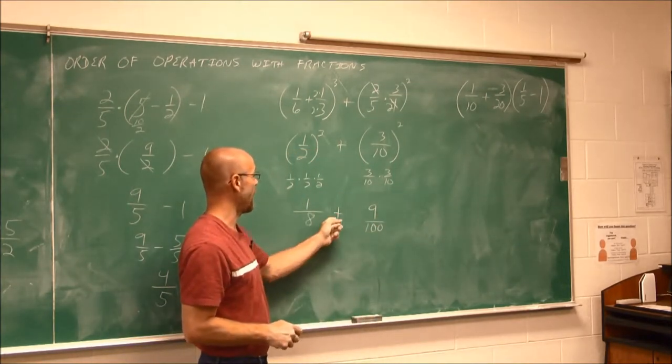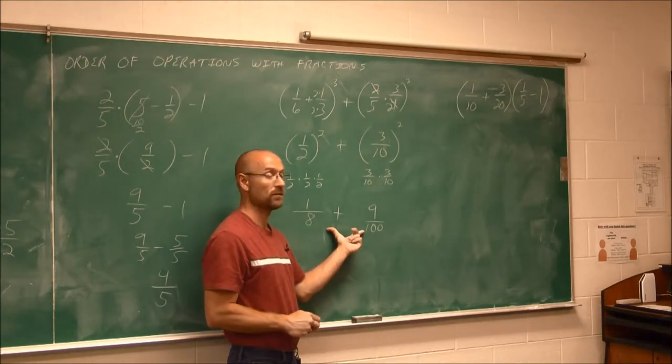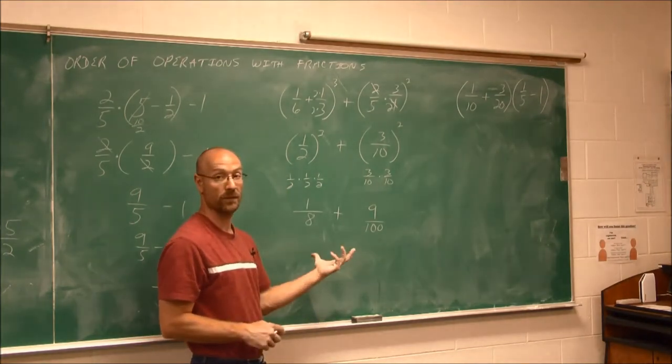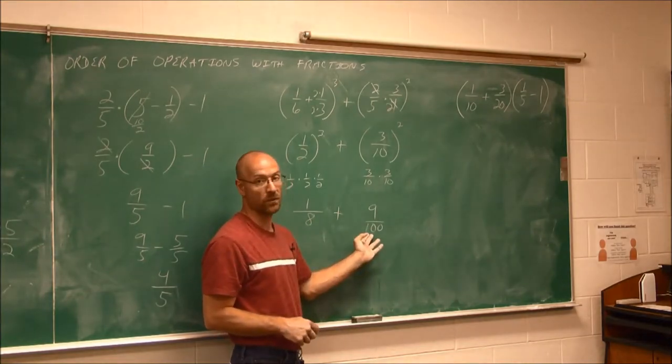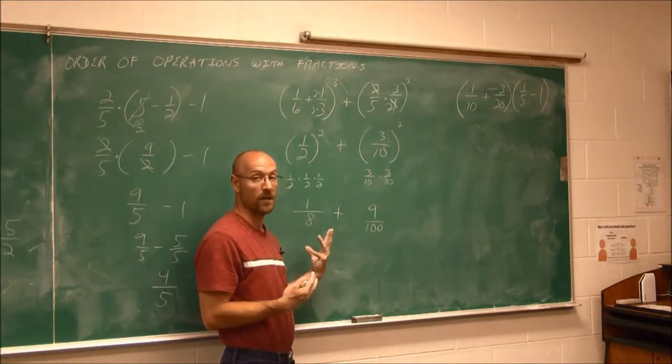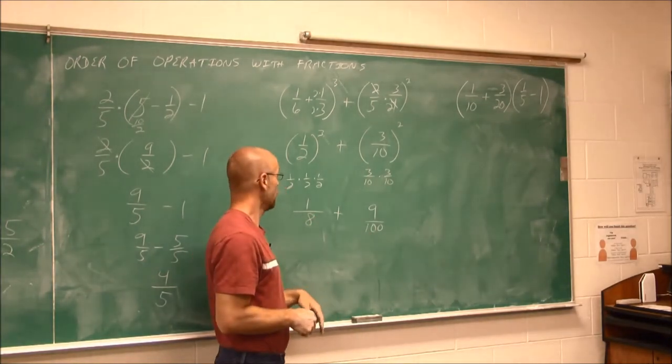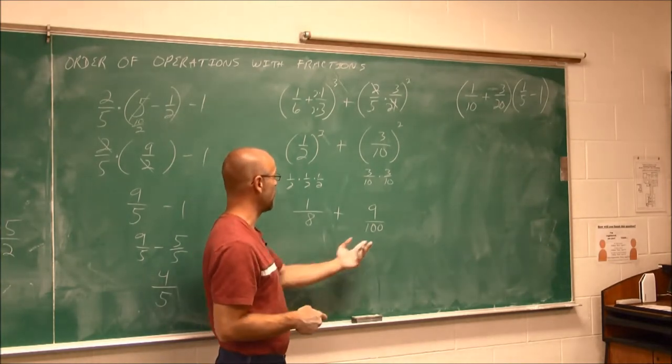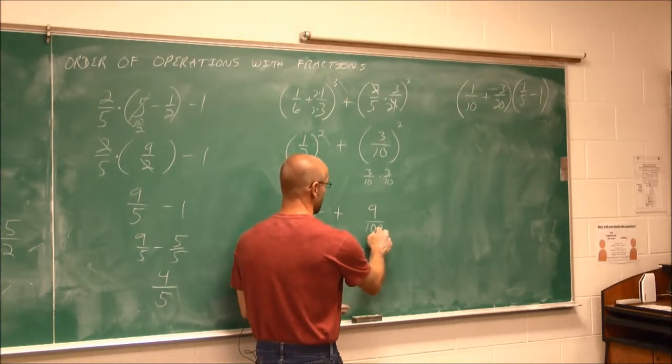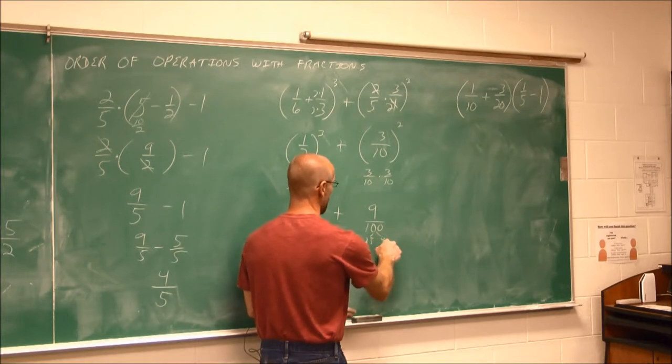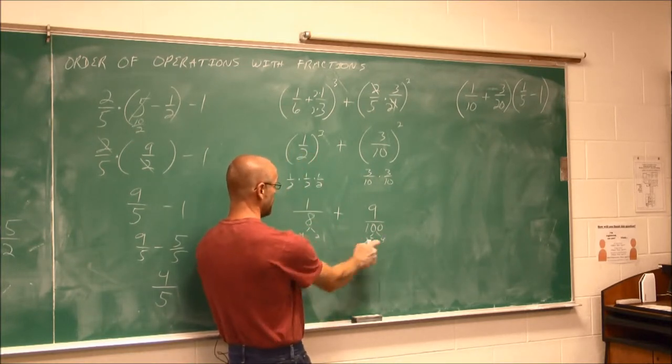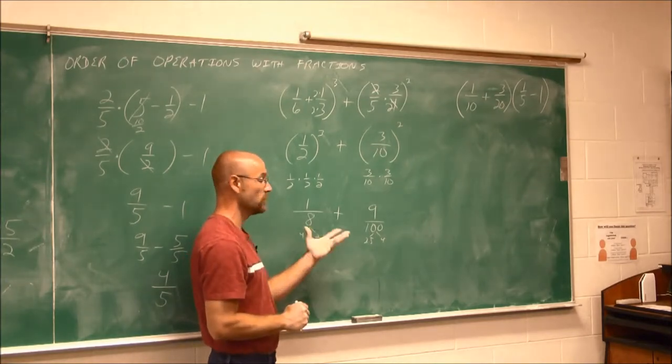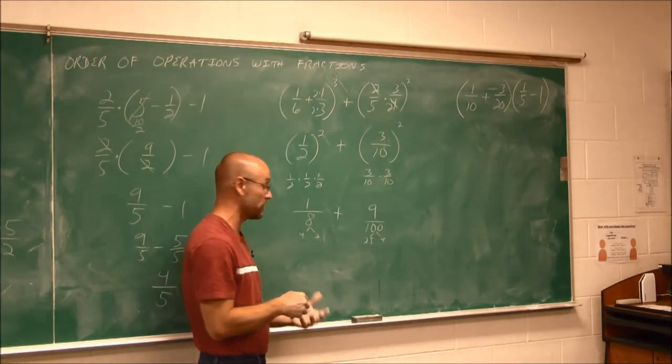Now, in order to add fractions, I have to have a common denominator. I know 8 does not go into 100. 100 is not a multiple of 8. So maybe I want to factor it down. I know that this is 25 times 4, and this is 4 times 2. I see that common factor of 4. So that's good news. That's part of my LCD.